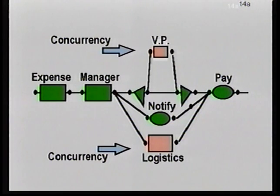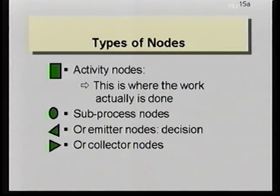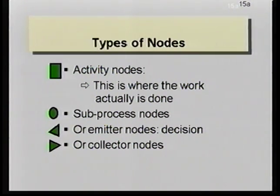What I'd like to do is spend just a little time talking about the kinds of nodes. You notice in the picture there are four different kinds of nodes based on shape. The rectangular ones we call an activity node, and this is where most of the work actually gets done. The activity nodes have attributes like the set of people who have work to do at this node and an attribute that describes what work is to be performed at this node.